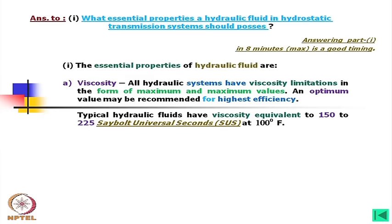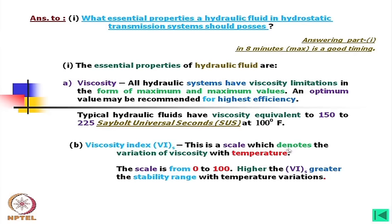The next essential property is viscosity index. Viscosity index indicates the variation of viscosity with temperature — it is a scale from 0 to 100, where a higher viscosity index means greater stability over a wide temperature range.